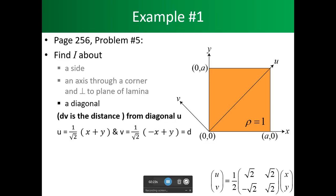Our matrix tells us that u is equal to 1 over the square root of 2 times x, plus the square root of 2 times y. Our v is equal to 1 over the square root of 2 times the quantity negative x plus y. As stated, v will equal our distance d.